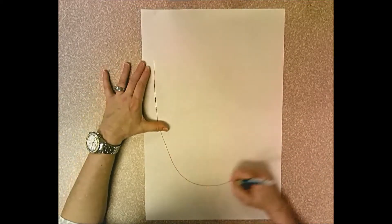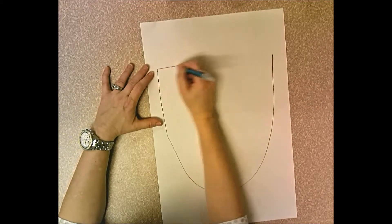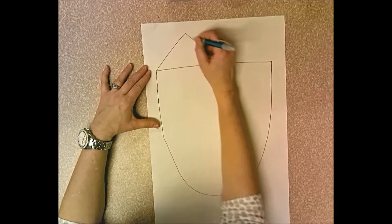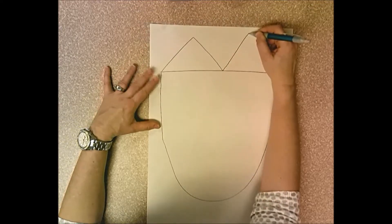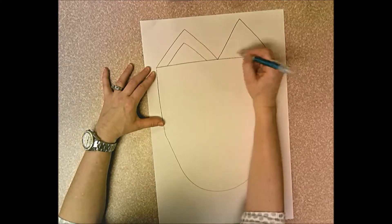So you're going to start with a curved line, straight line across the top, two triangles across the top and then draw a smaller triangle inside each of the bigger triangles.